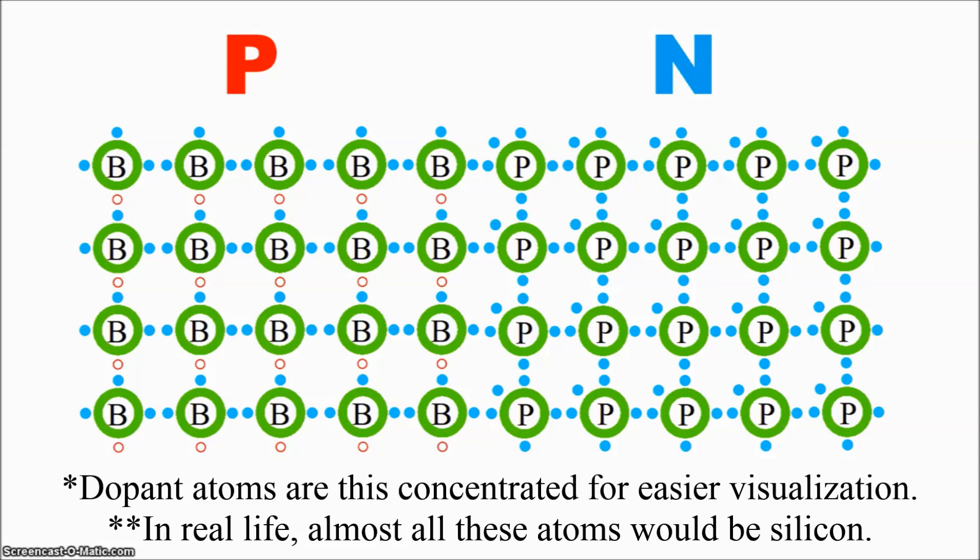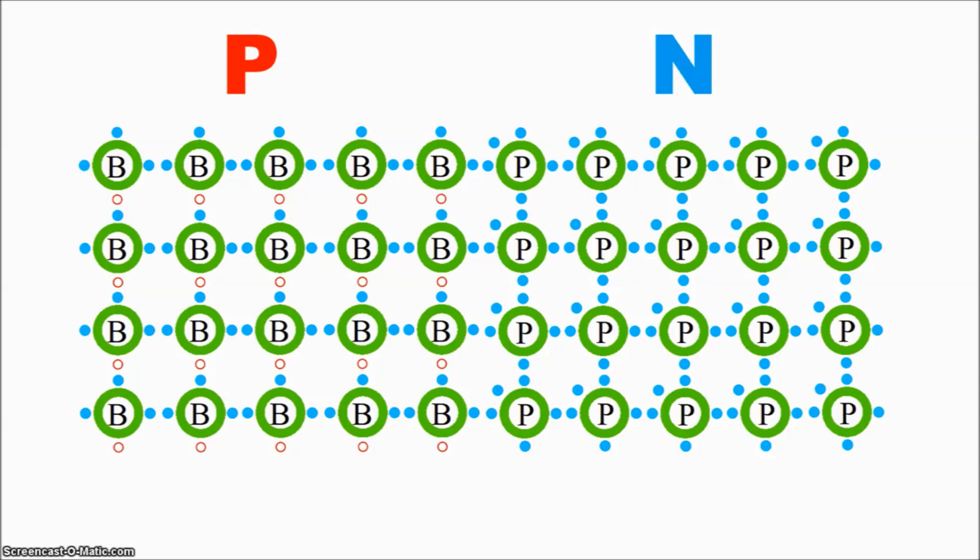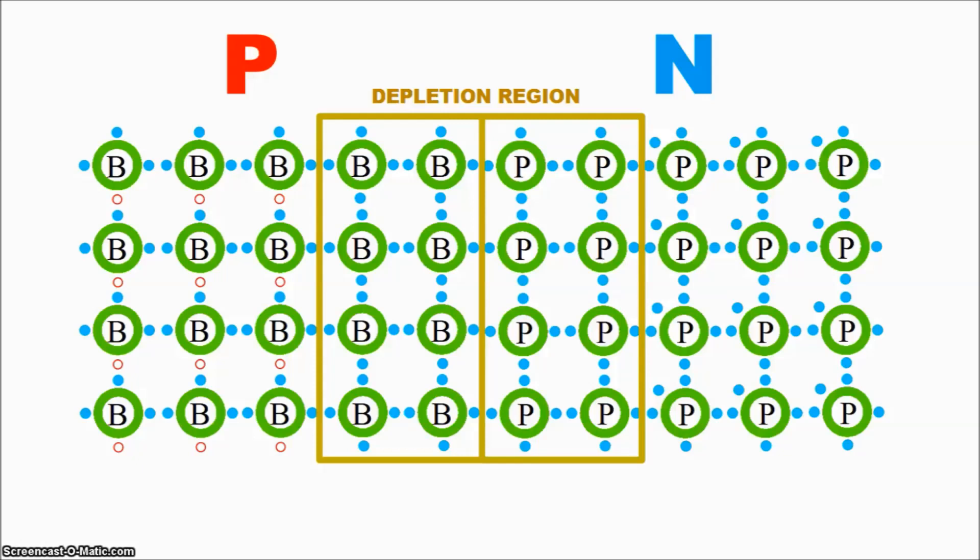And what happens? Remember, both crystals are neutral, but they simply have freely moving negative electrons and positive holes. At the border between p-type and n-type, the extra electrons from the n-type silicon jump over into the holes in the p-type silicon, and fill those holes. Because of this, a depletion region forms and creates a barrier between the two crystals.